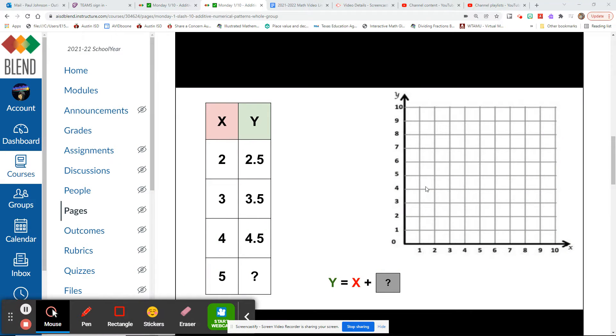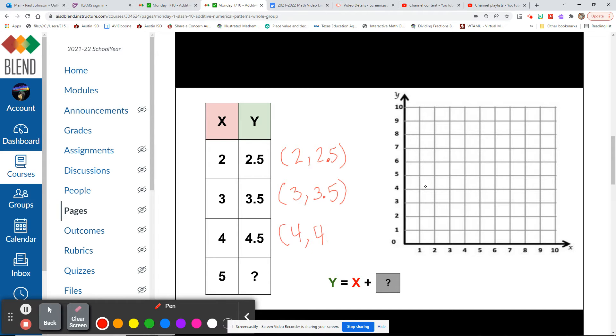All right, welcome back. Let's go ahead and make some ordered pairs out of the information on our graph. This time we do have decimals as part of our y value, so we're going to have to go a half point whenever we graph. It's just an observation I'm making by making my ordered pairs.